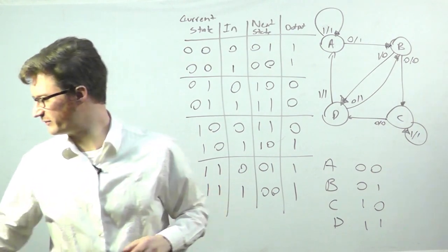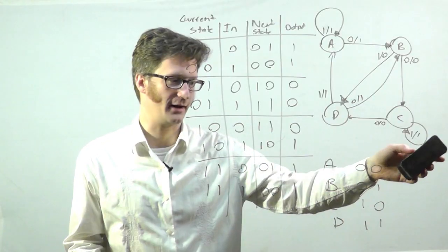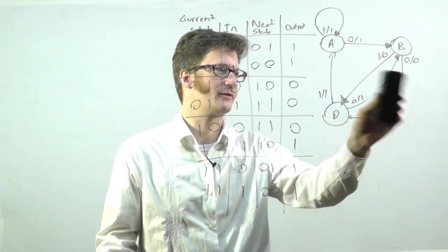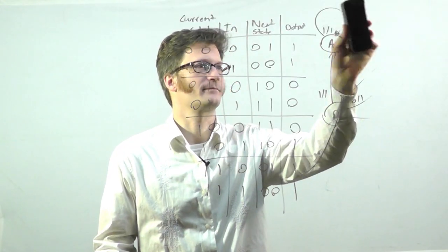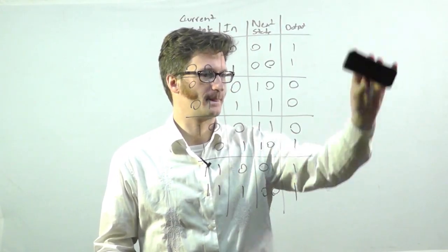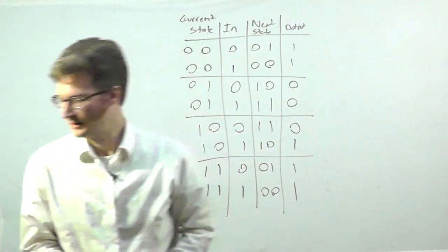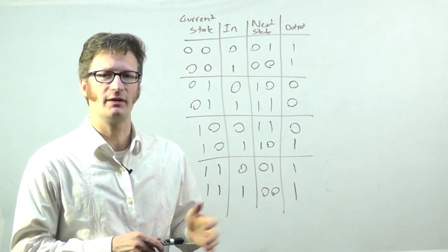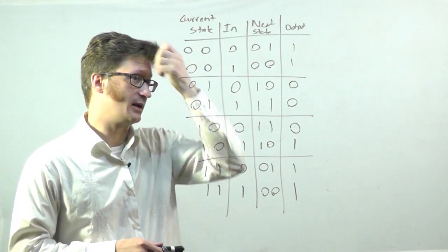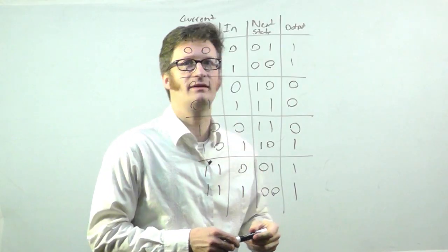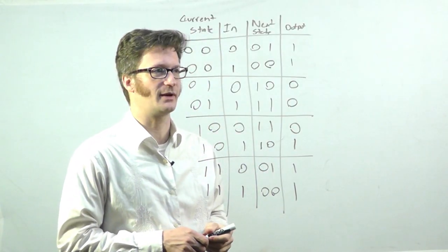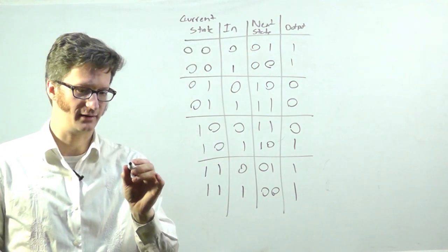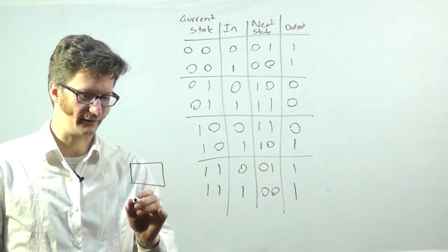So, the first thing I'm going to do is just erase off the state diagram and the little cheat sheet that I made for myself here. And what I need to do for this circuit, I'm going to implement it with D flip-flops. And so, what I need to do is I need to get the inputs of my flip-flops, which I'll draw these down here.